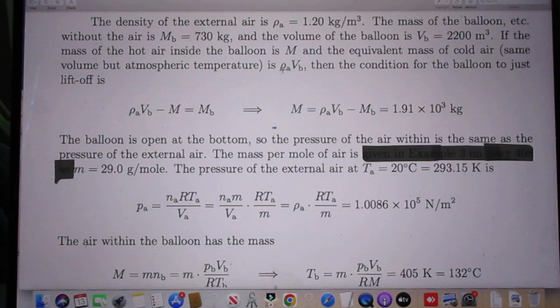So if the mass of the air inside the balloon is capital M, and the equivalent mass of cold air with the same volume but at atmospheric pressure is rho A times V B, then this is the condition for lift off. And you can calculate M now.